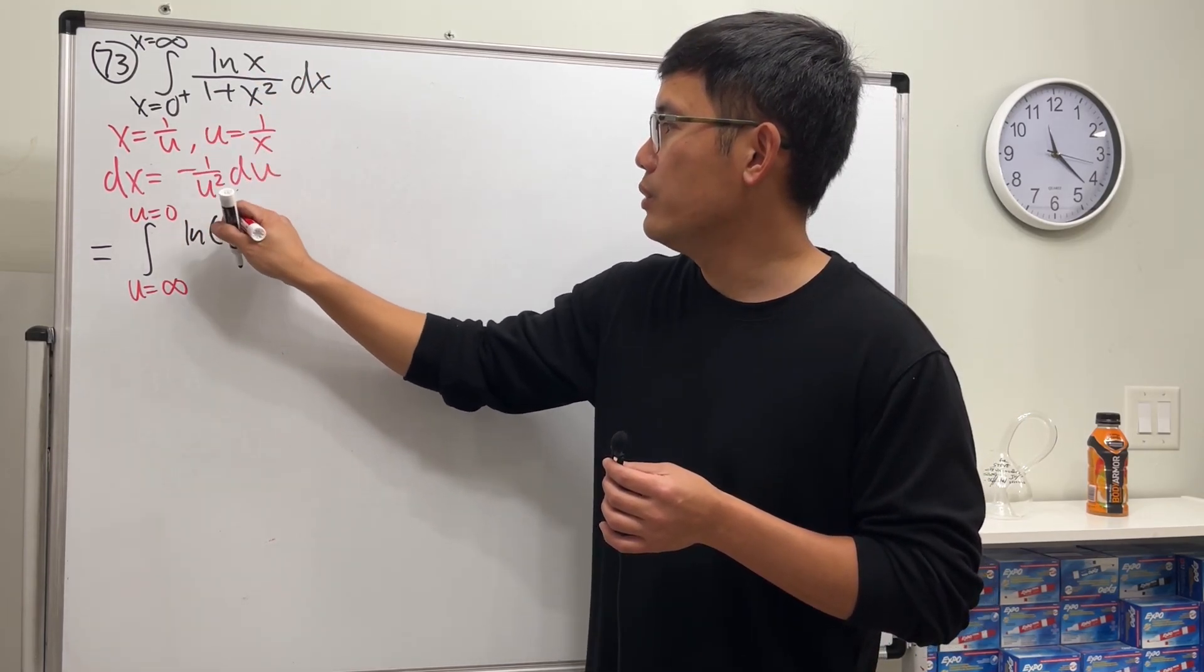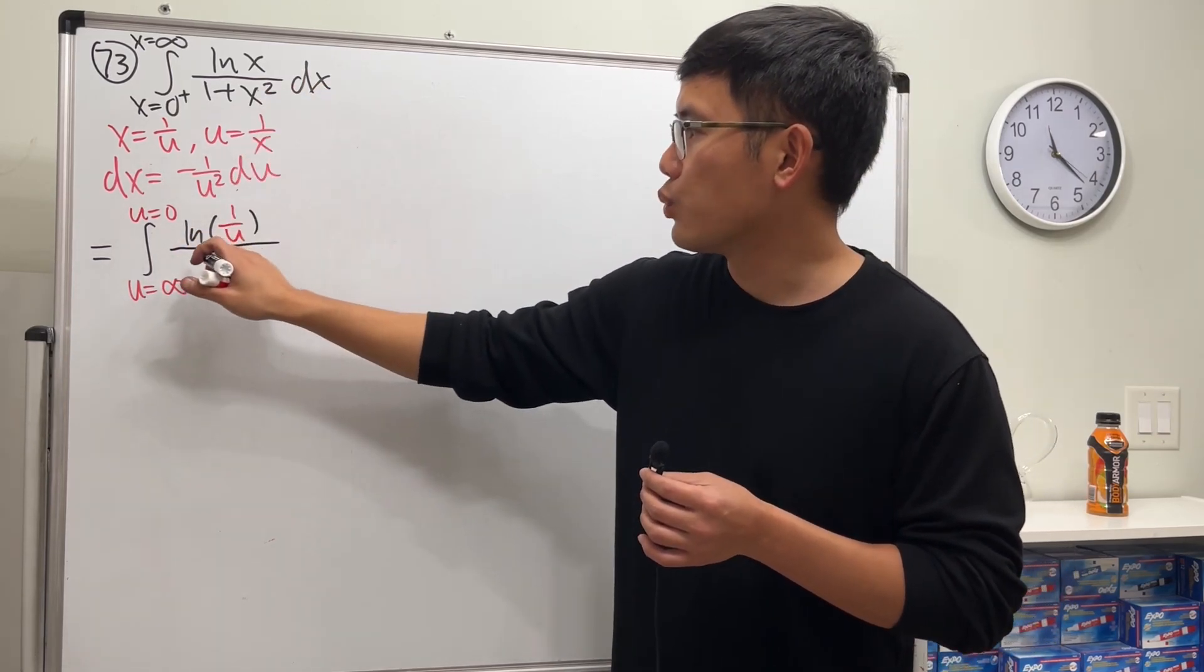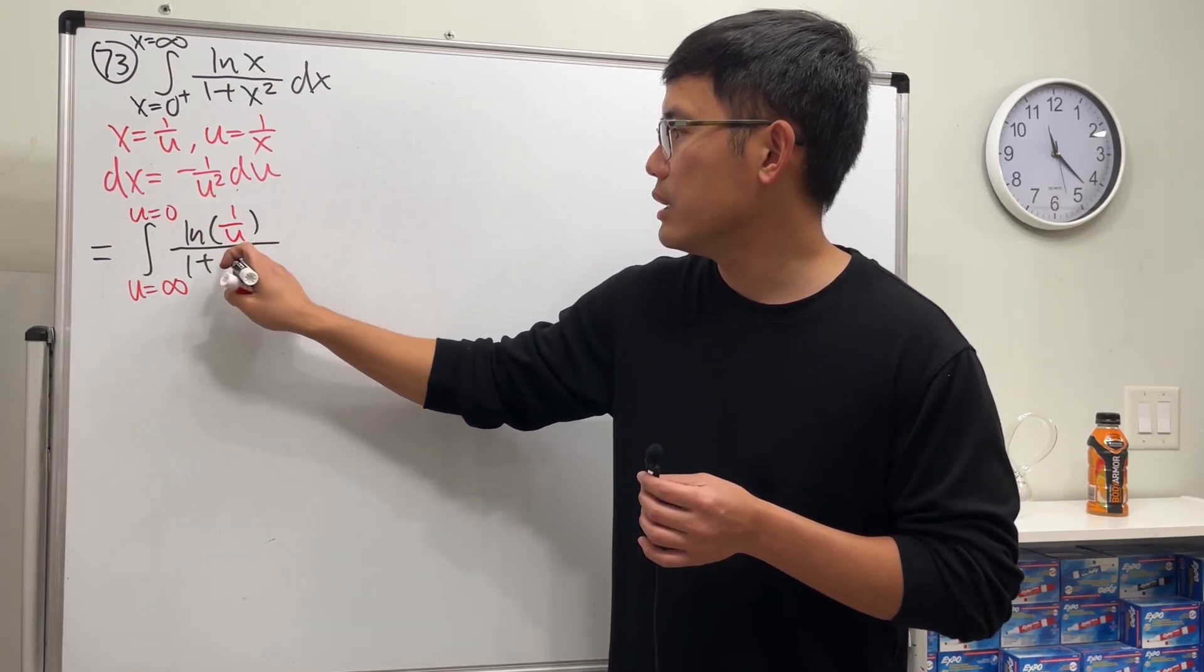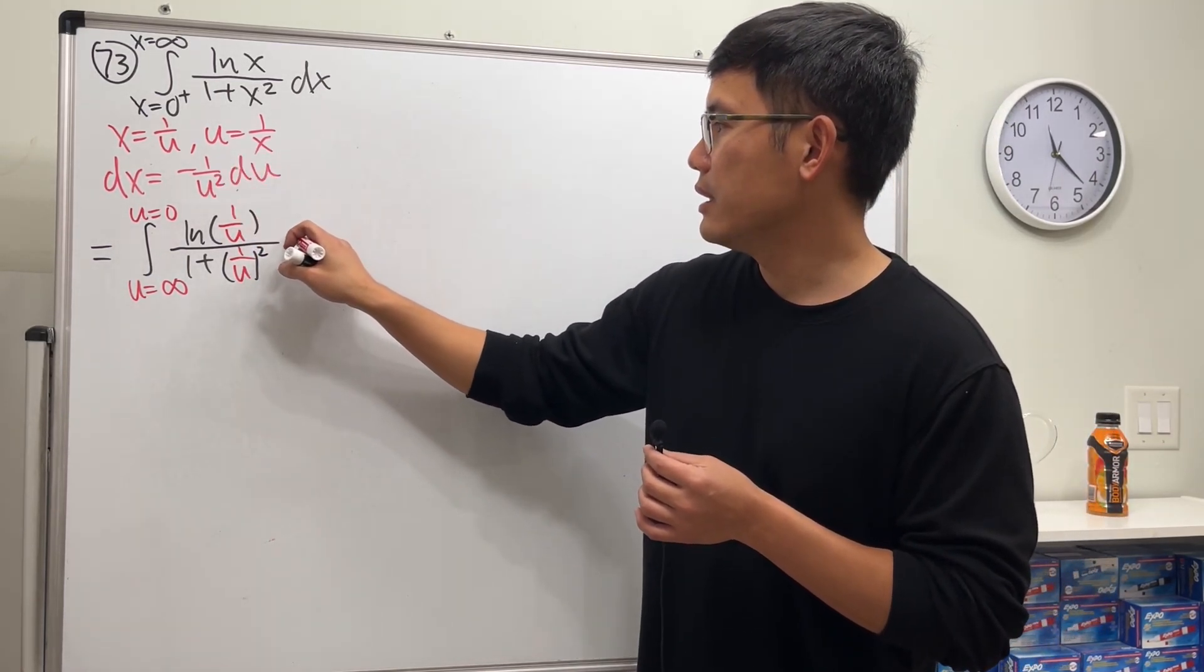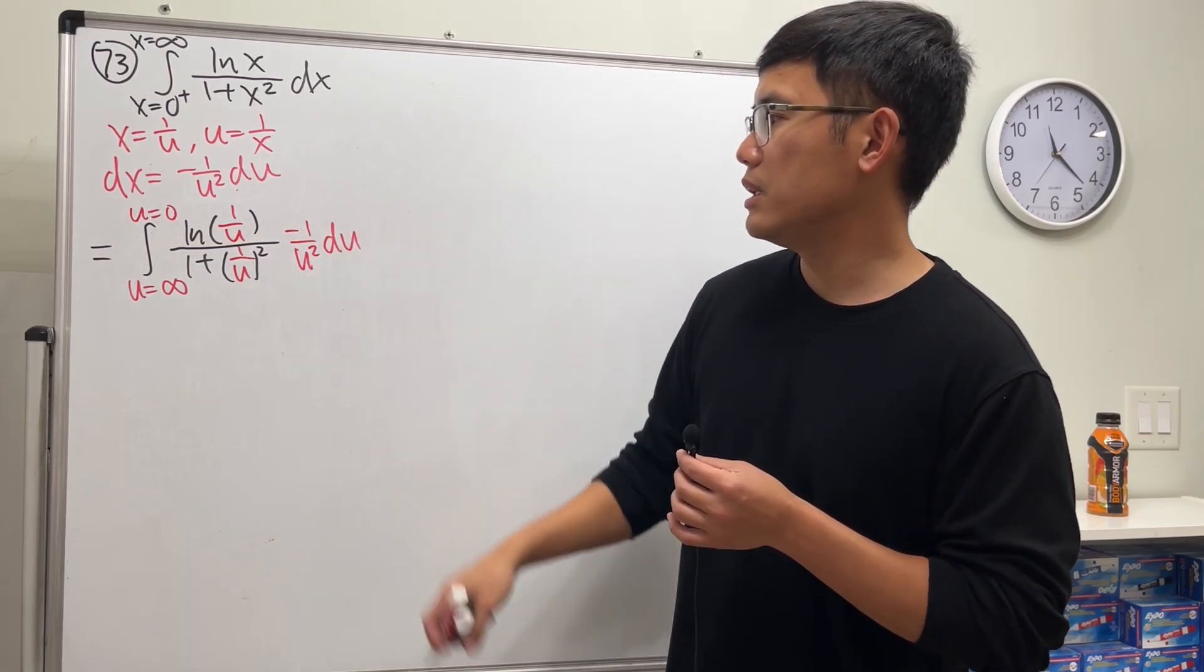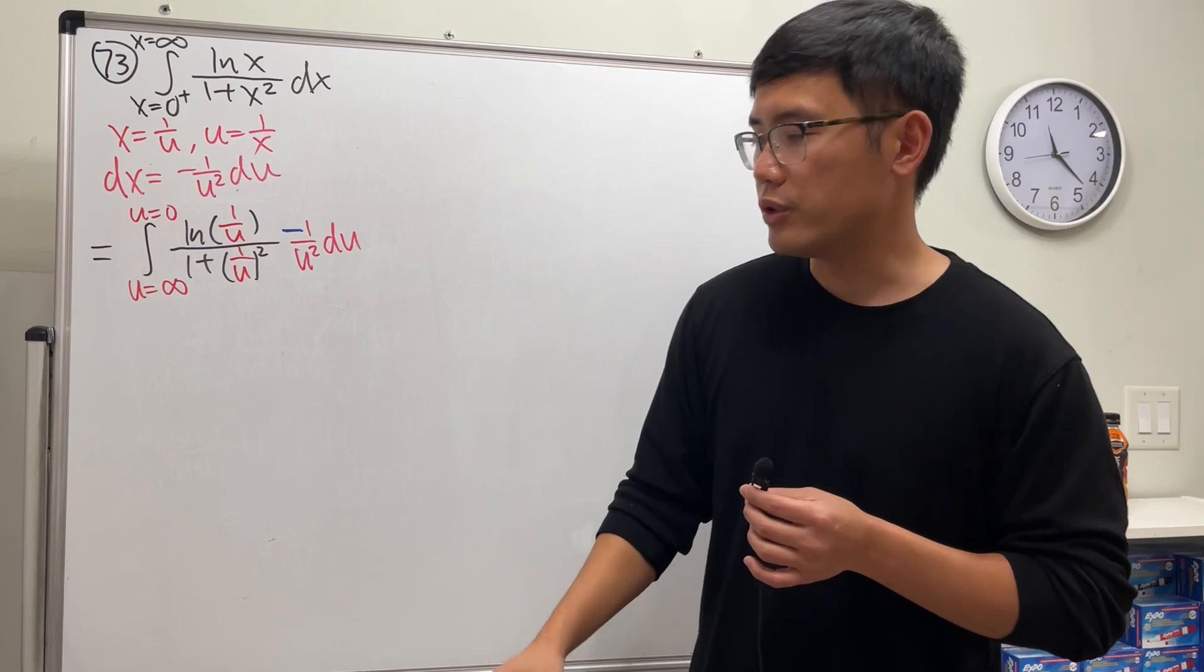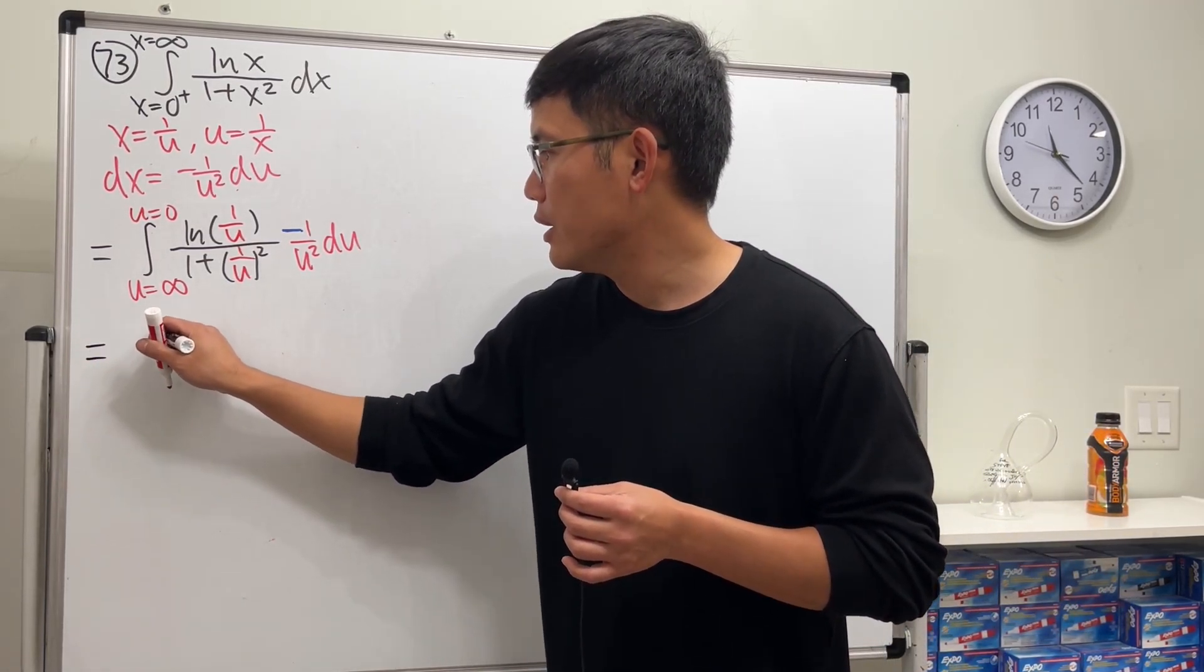Over 1 is 1, x squared of course you square both sides but I will write it down like this: 1 over u in the square. Lastly dx is that negative 1 over u square du. Now I'm going to use this negative to help me switch the order of integration, so I'm going to have the integral going from 0 to infinity thanks to this negative sign.